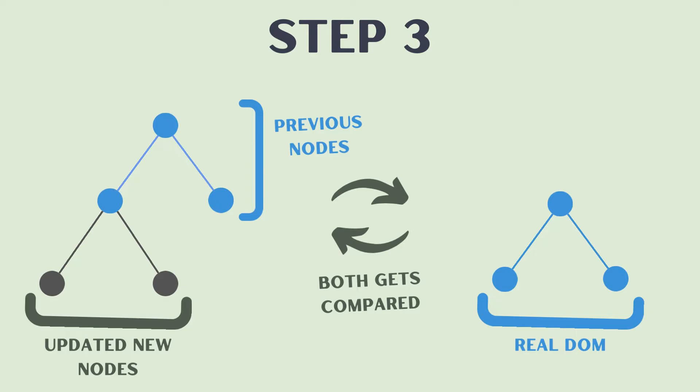before state updation or before rendering the component. Let's say we change something and save, the component will be rendered again and we will have these gray nodes here, the new nodes after state update.